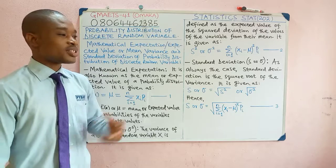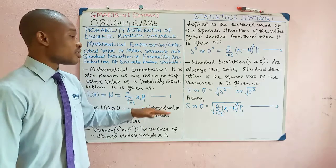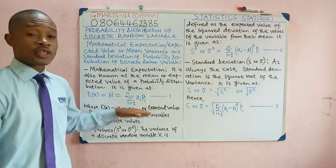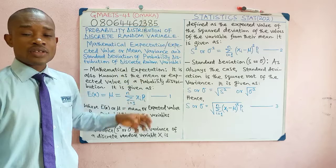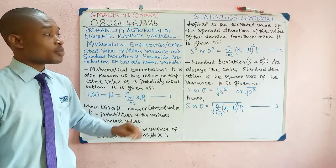Under probability distribution, you don't divide by anything. There is no denominator. Frequency is replaced with probability — knowing the formula under measures of dispersion and central tendency can really help you memorize this formula easily.